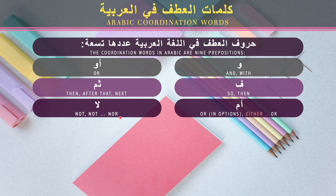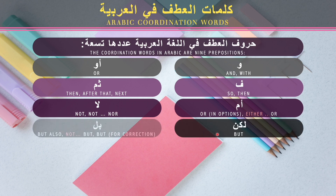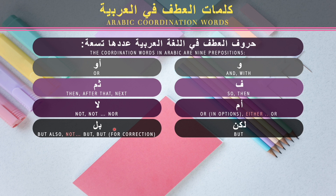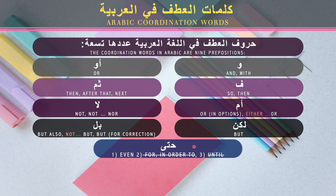Then لا, meaning 'not', which can also be used in the construct 'neither/nor'. Then لكن, meaning 'but'. We also have the word بل, which also means 'but' — it's not used much in spoken Arabic today, but it appears in Modern Standard Arabic. It is used for the meaning of 'but' and also when you want to correct something — for example, 'write three papers, no, four papers.' In most contexts, بل can be replaced with لكن.